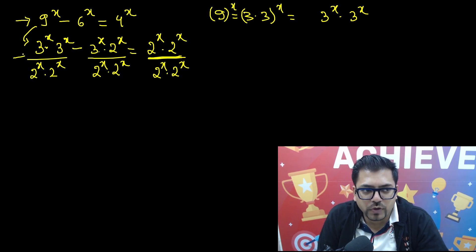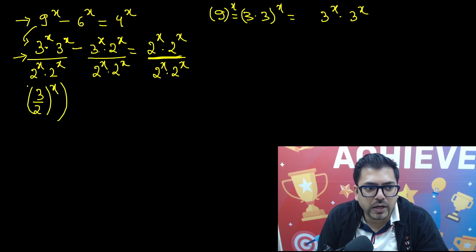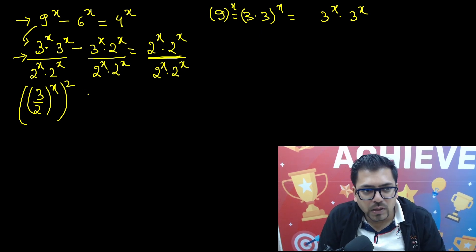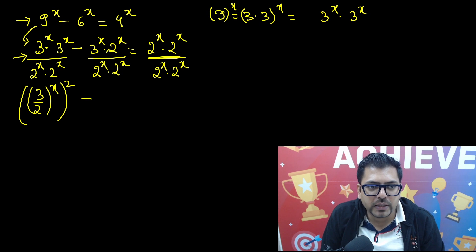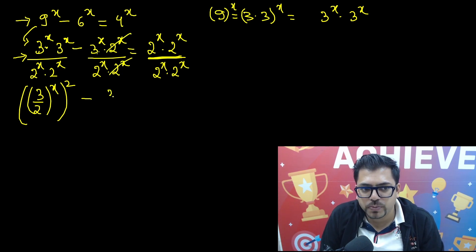First of all, the first term will be 3 by 2, 3 by 2 raised to power x, and then whole raised to power 2, because 3 by 2, 3 by 2, there are two times. Now moving forward, minus here 2 raised to power x, 2 raised to power x gets cancelled, so we have 3 raised to power x upon 2 raised to power x, that's 3 by 2 whole raised to power x.